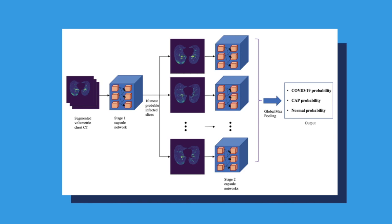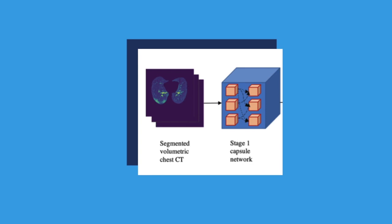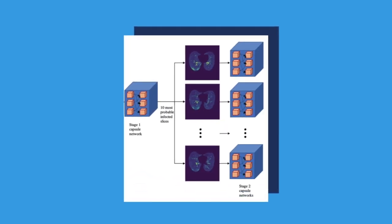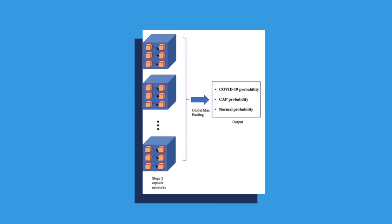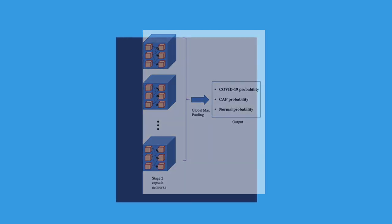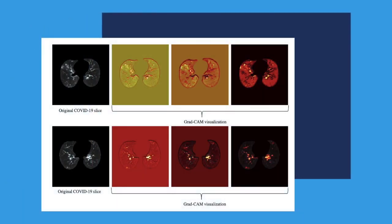The model uses a two-stage capsule network architecture. First, CT slices go through a capsule network one by one to detect those with evidence of infection. Second, the 10 most probable slices with infection go through a time-distributed capsule network, after which a global max pooling determines the output. By using clinical data, we also improved the performance. Compared with the radiologist, the model achieves human-level performance. By using the GradCam analysis, we show that the model is paying attention to relevant locations of the image.